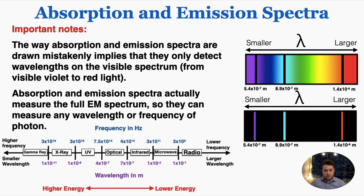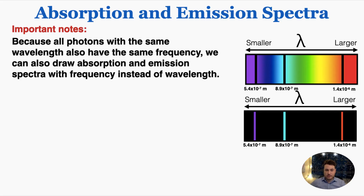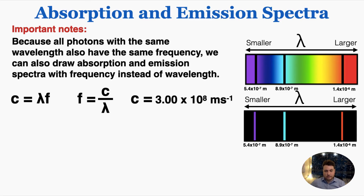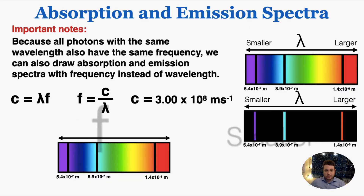A few important notes to finish the lecture. The way absorption and emission spectra are drawn mistakenly implies they only detect visible wavelengths — violet to red light. They're often drawn as rainbows, implying they only deal with visible light, but absorption and emission spectra actually measure the full electromagnetic spectrum and can measure any wavelength or frequency of photon. Visible light is only one small part of the much larger electromagnetic spectrum. Because photons with the same wavelength also have the same frequency, we can also draw spectra with frequency instead of wavelength, using the equation speed of light equals wavelength times frequency.